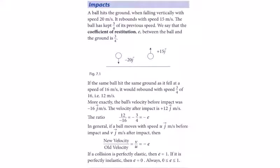In this video we're going to look at impacts. A ball hits the ground when falling vertically with speed 20 m/s and rebounds with speed 15 m/s. Going down this direction is negative j and going back up is positive j. This introduces the coefficient of restitution e.